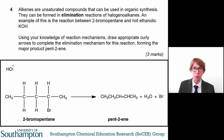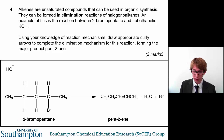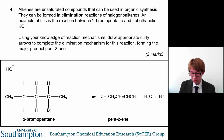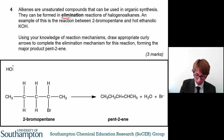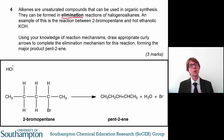Now we get to the slightly more difficult part of the results, because these are some reactions that you may not have seen before. However, you can use your understanding of mechanistic chemistry to have a good go at answering these questions. Alkenes are unsaturated compounds that can be used in organic synthesis and can be formed in elimination reactions. An example of this is the reaction of 2-bromopentane with hot ethanolic potassium hydroxide — that just means the potassium hydroxide is dissolved in ethanol.